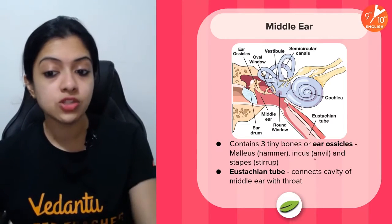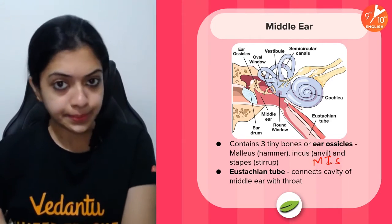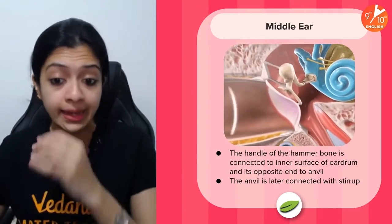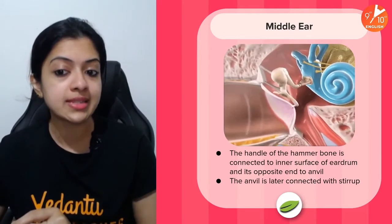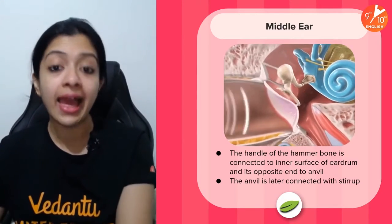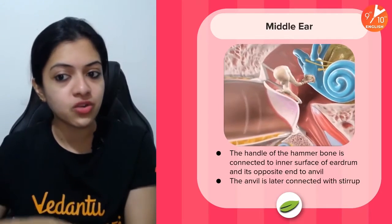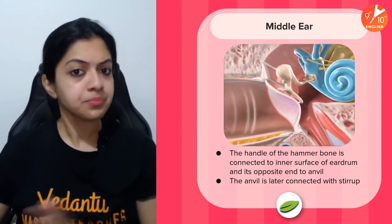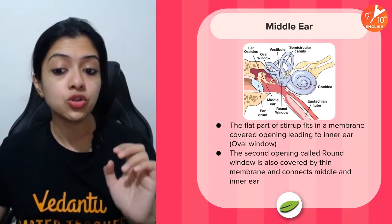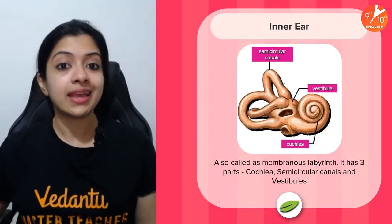The ossicles — malleus, incus, and stapes — must be known in this order. The handle of the malleus (hammer bone) is connected to the inner surface of the eardrum. Its opposite end is connected to the incus (anvil), and the incus is connected to the stapes (stirrup). The stapes is connected to a membrane-bound structure called the oval window, which leads to the inner ear. There is also another opening called the round window, also covered by a thin membrane, which connects the middle and inner ear.